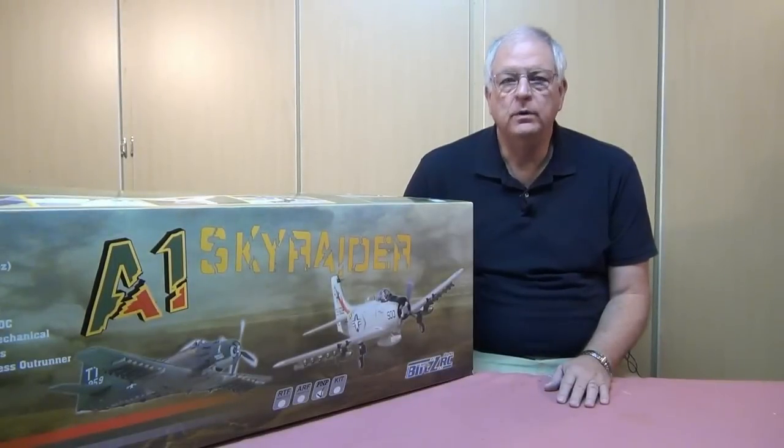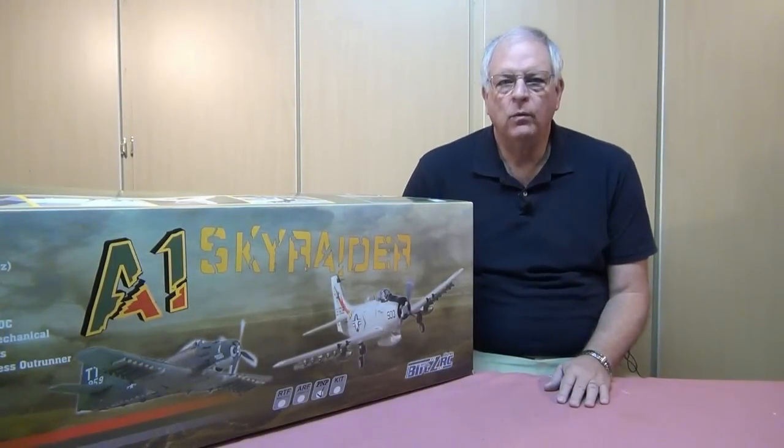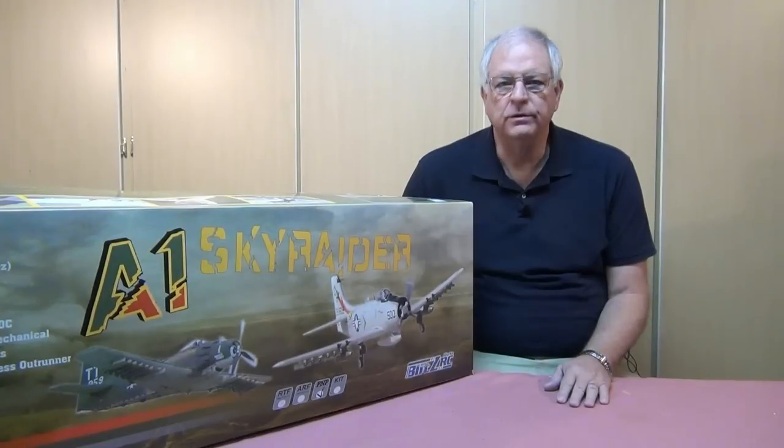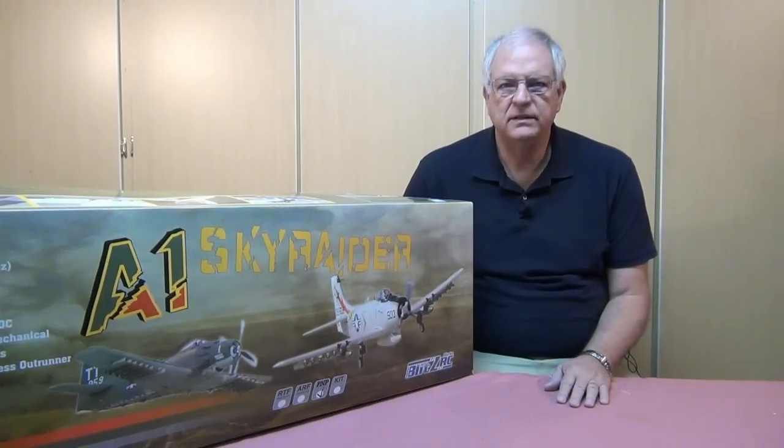Hi and welcome to part two of this video build log for the A1 Sky Raider. In this part we'll be attaching the control horns to the flight controls and finishing up the assembly of the wing. Let's get started.